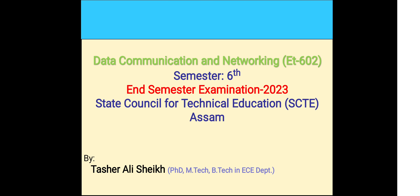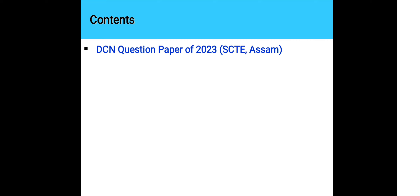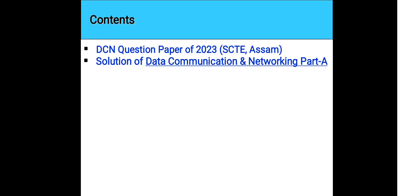Today I am going to discuss about the Data Communication and Networking subject. This is a sixth semester subject, subject code is 602, and this question paper came in the year 2023. The contents of today's video is the DC&N question paper 2023 — Data Communications and Networking. We will do the solutions for Part A.